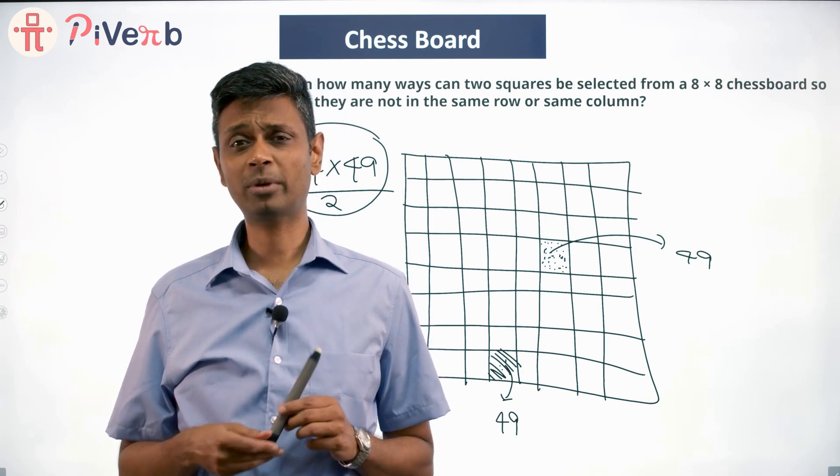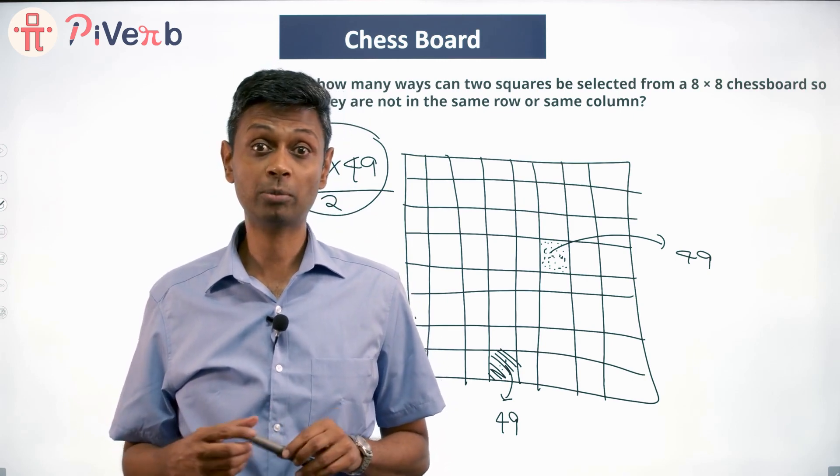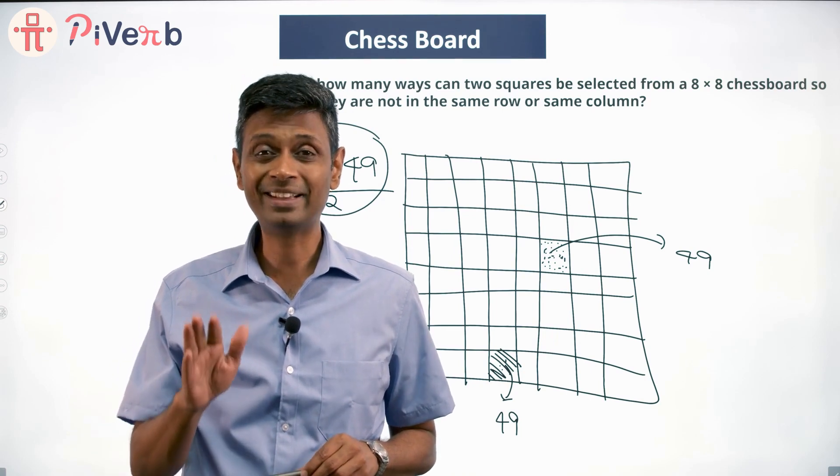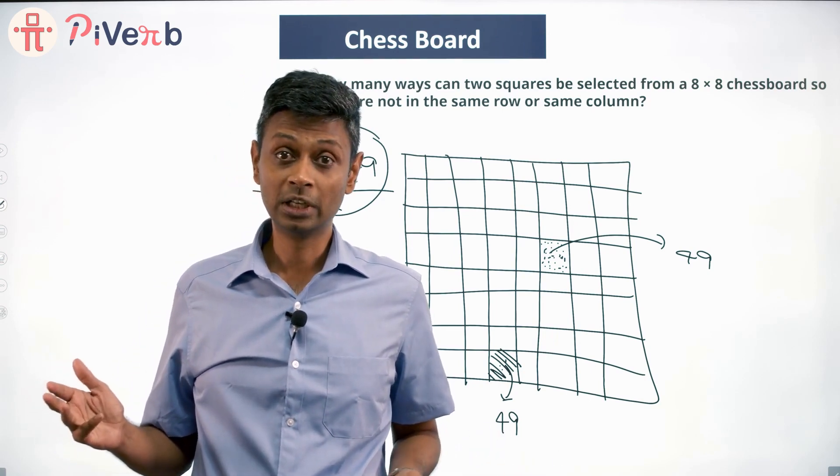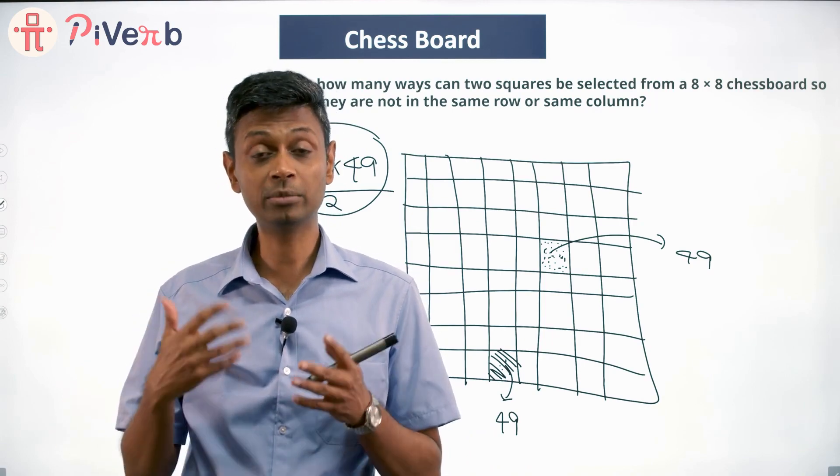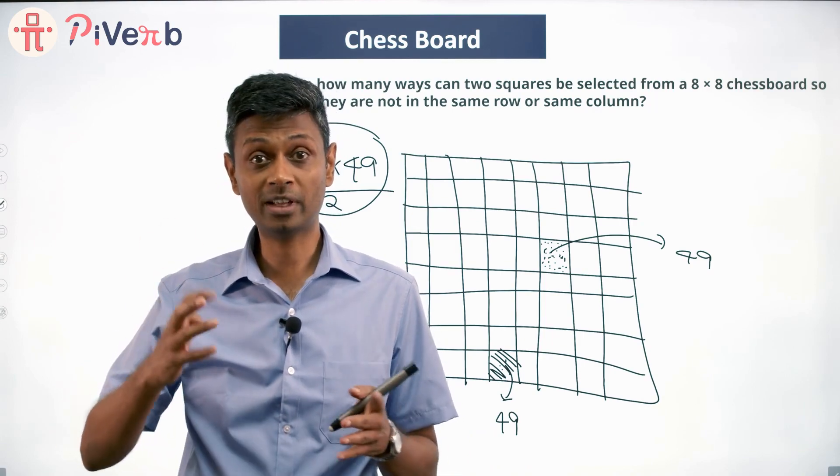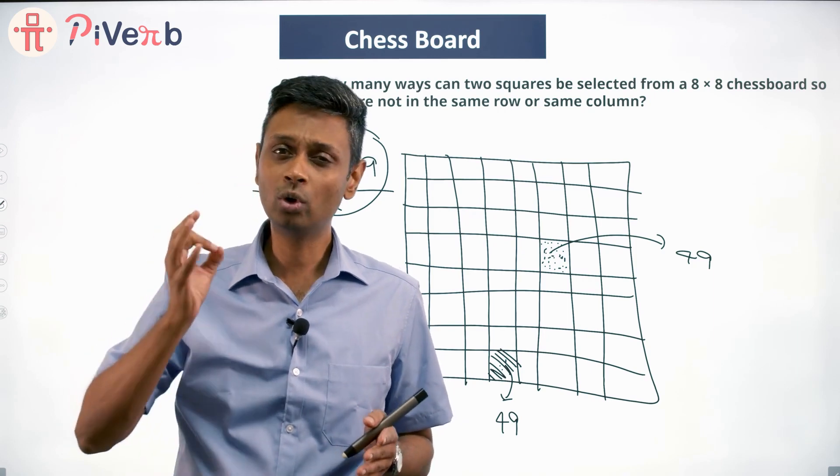So every time you count, you think about that friend of yours called double counting. Am I counting once or am I counting twice? If it so happened that I am counting twice, that's all right. I am exactly double counting. I can fix this. All I need to do is divide by 2.